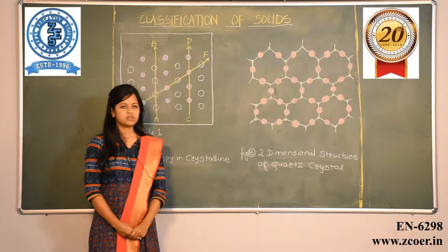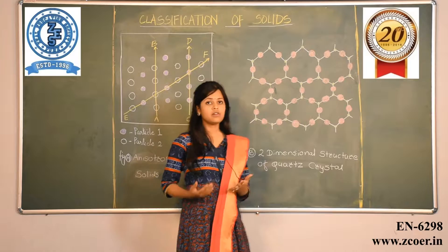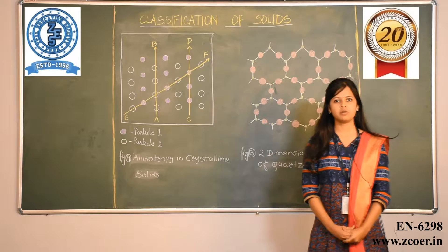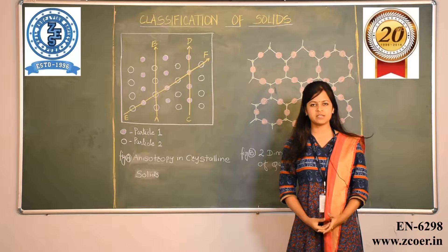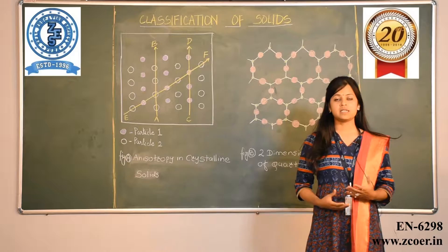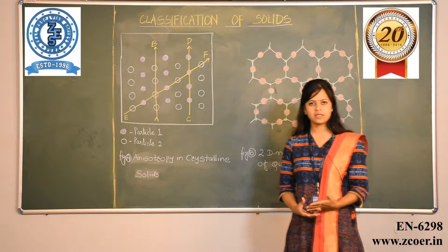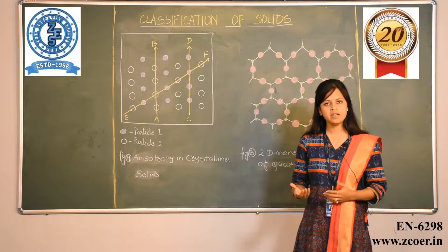The arrangement of particles in crystalline solids is such that the intermolecular forces of attraction are maximum. The forces responsible for stability of the solid can be covalent bonds, ionic bonds, or van der Waals forces of attraction. Crystalline solids are made up of small crystals called unit cells, which are the basic repeating units. Due to this orderly arrangement, crystalline solids have a sharp melting point and melt completely at a particular temperature.